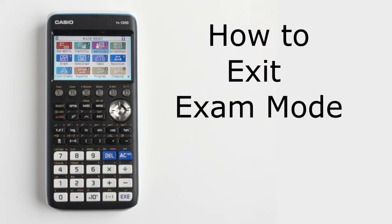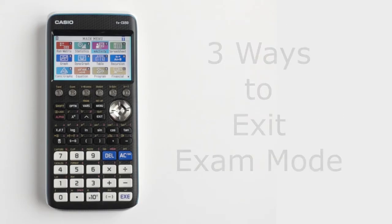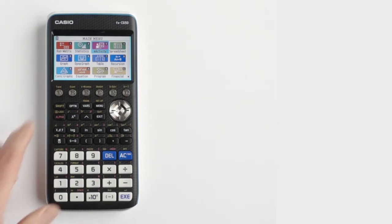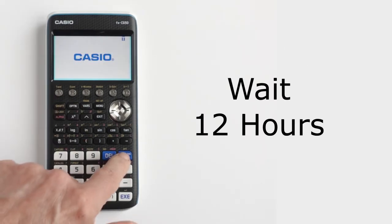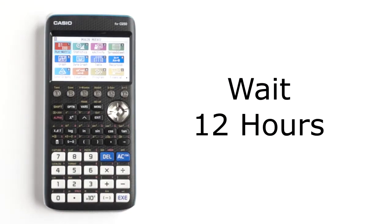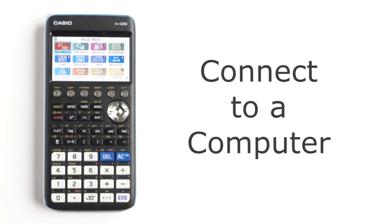How do I exit exam mode on the Casio FX-CG50? There are three ways to exit exam mode. The first way is to turn off the calculator, then wait 12 hours after you have entered exam mode. After the 12 hours have elapsed, turn the calculator back on. The calculator will then automatically exit exam mode.